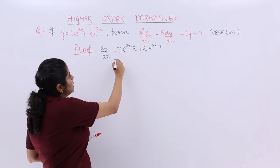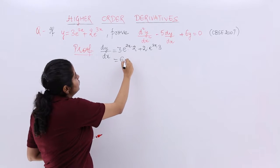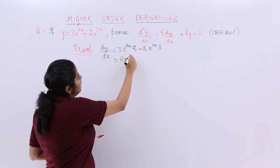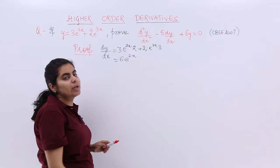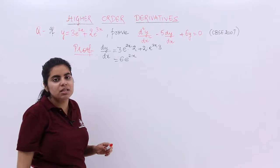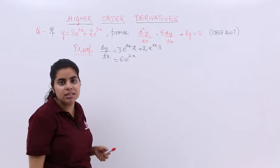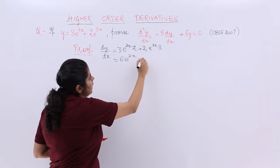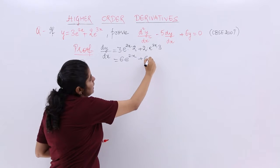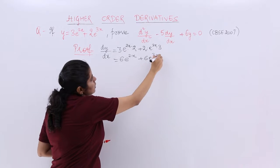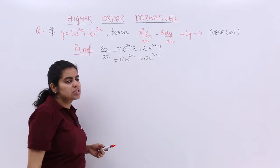Now let's simplify. We get 6e raised to the power 2x — 6 because 3 times 2 makes 6. Then again 2 times 3 makes 6, so it is 6e^(2x) plus 6e^(3x).